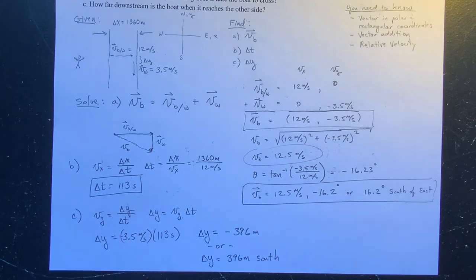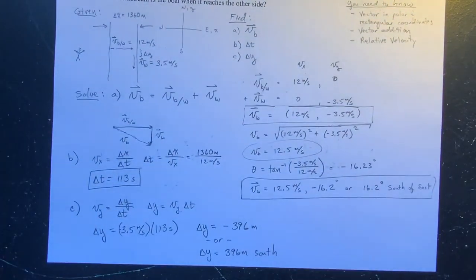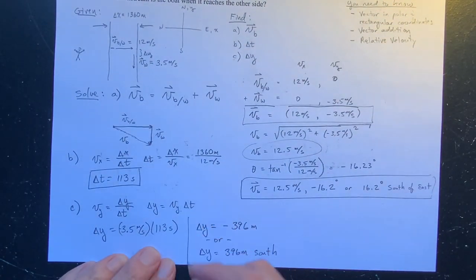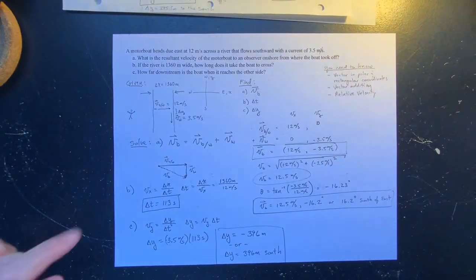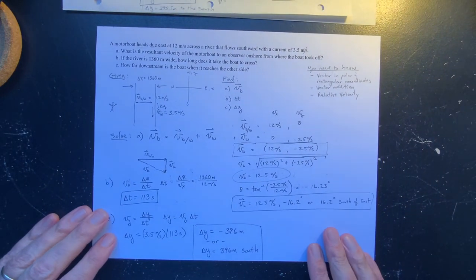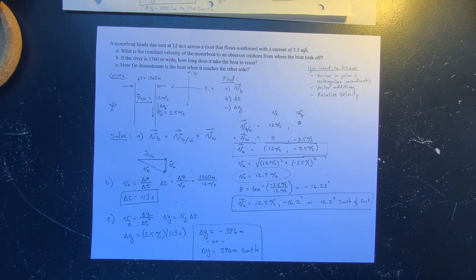You can express delta Y either way — as negative 396 meters in rectangular coordinates, or as 396 meters south. Either is correct. And that's the whole problem. Hope you enjoyed it. I do physics tutoring — I'm your physics pal and I'd like to be your physics tutor. Get in contact with me if you need a good physics tutor. That is all.